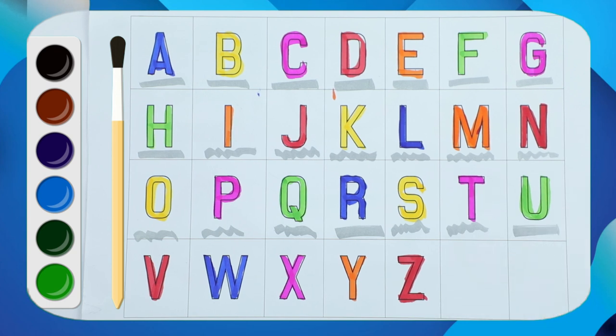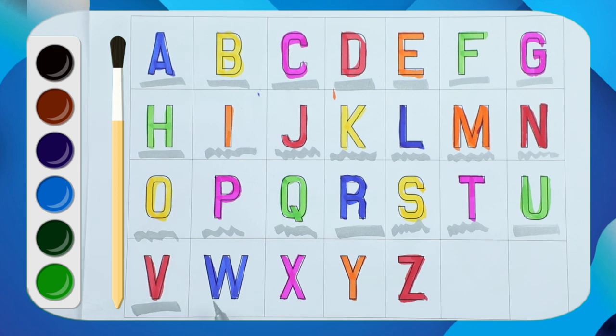Green color U, U for umbrella. Red color V, V for van.